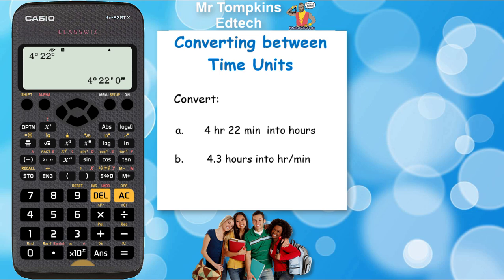Now if I want to convert that just into hours, which is handy for calculations with time, I'm just going to press the symbolic to decimal key. That turns it into a fraction of 131 over 30. And if I press it again, I get a decimal, which is 4.36667. I'm going to round that off to three significant figures and write down 4.37.